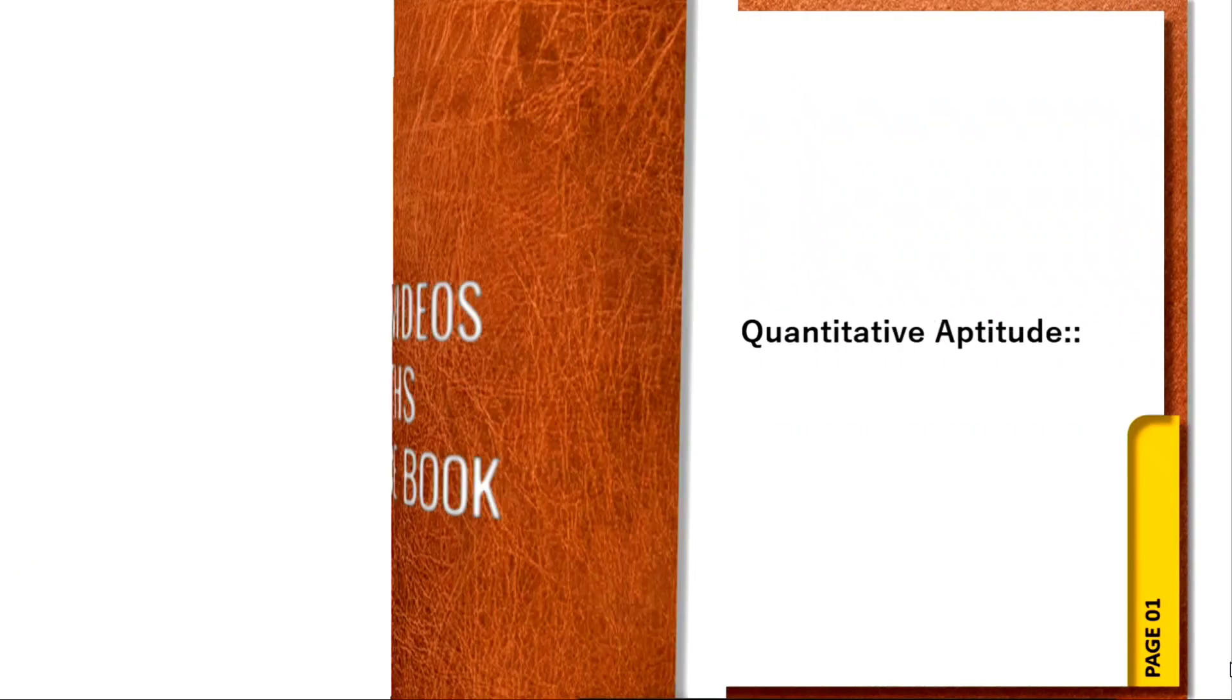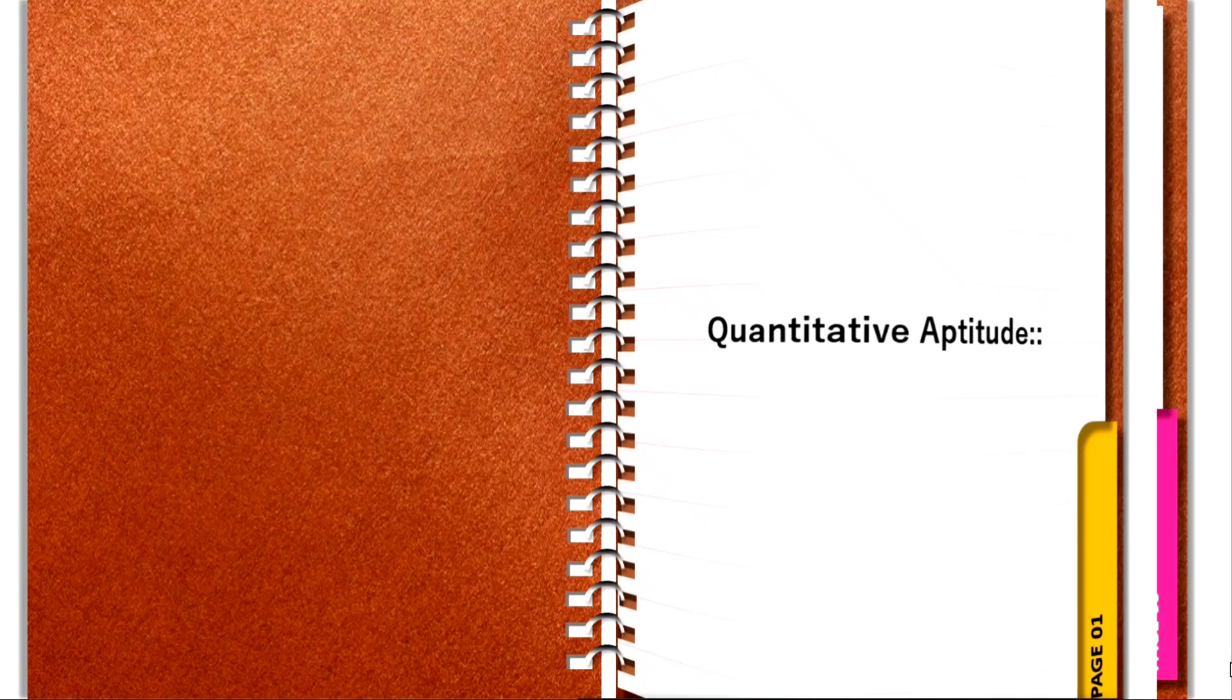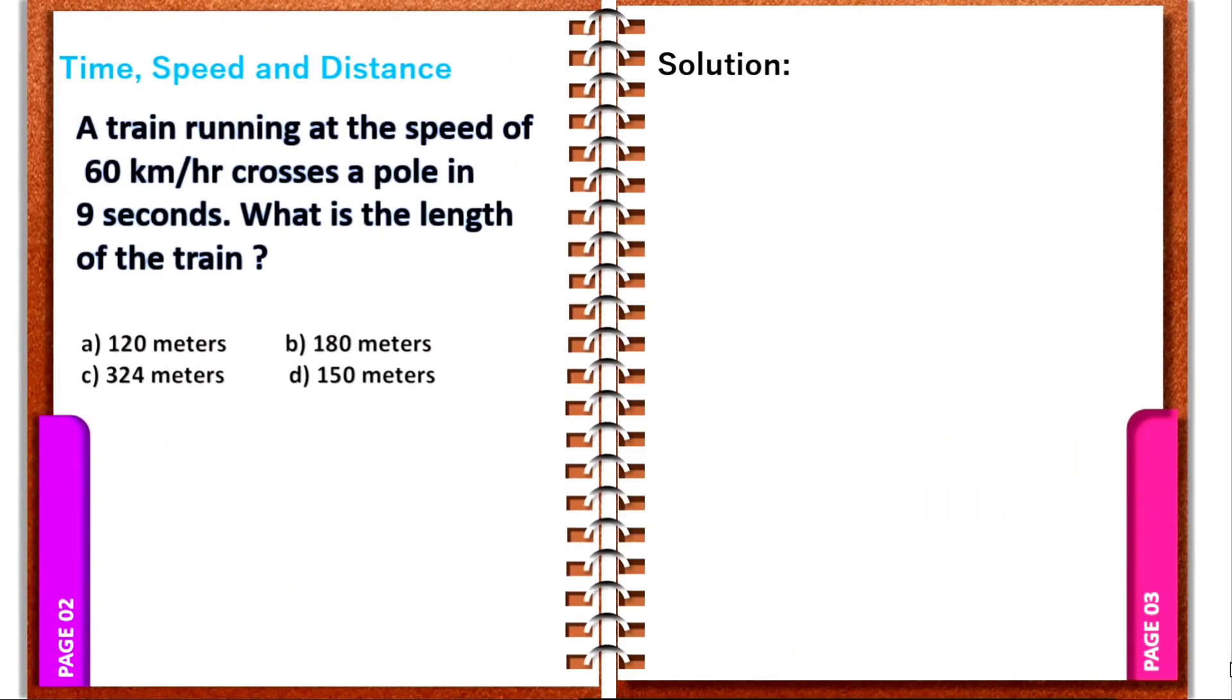The problem is: a train running at the speed of 60 km per hour crosses a pole in 9 seconds. What is the length of the train?